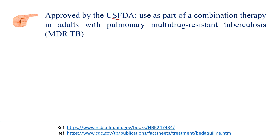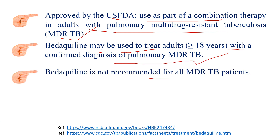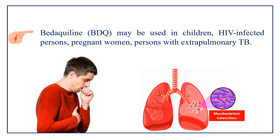Bedaquiline has been approved by the US FDA for use as part of combination therapy in adults with pulmonary multiple drug-resistant tuberculosis (MDR-TB). It may be used to treat adults aged 18 years or older with a confirmed diagnosis of pulmonary MDR-TB. It is not recommended for all MDR-TB patients, and the drug is given in the form of Bedaquiline fumarate.